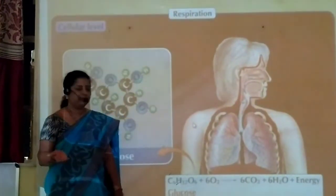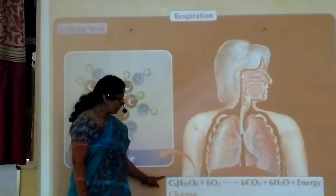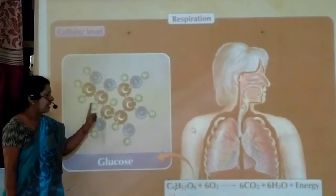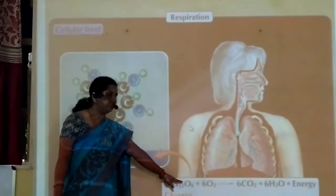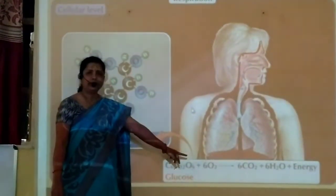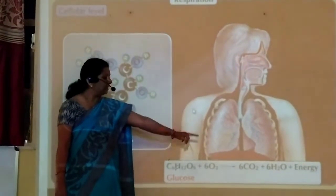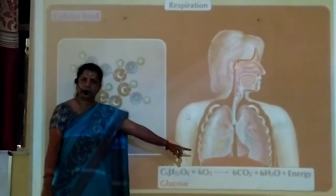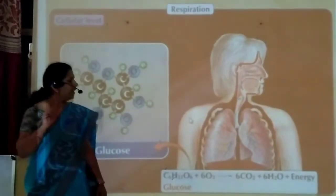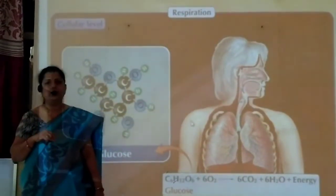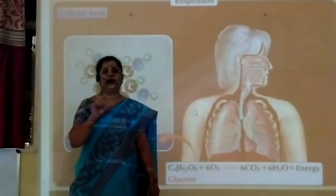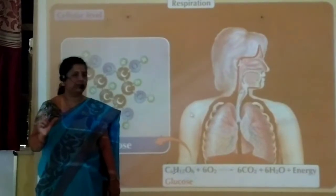Carbon dioxide is expelled out. Glucose consists of 6 carbon atoms, 12 hydrogen atoms, and 6 oxygen atoms — C6H12O6. It undergoes oxidation, combines with oxygen, and releases 6 molecules of carbon dioxide, 6 molecules of water, and energy, which is stored in the body as ATP. ATP is called the energy currency of the body because energy is utilized in the body only in the form of ATP.